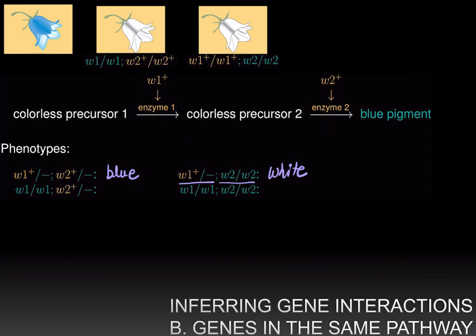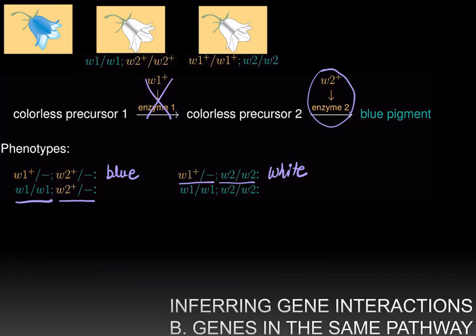If you are homozygous for the mutant allele of the first gene — W1/W1 — but have the dominant phenotype of the second gene with at least one copy of W2+, you still have enzyme 2. However, it does not matter, because you do not have a single wild type allele for the first gene, so you don't have enzyme 1. Therefore, you will never be able to convert colorless precursor 1 into colorless precursor 2, and you will end up with a white flower.